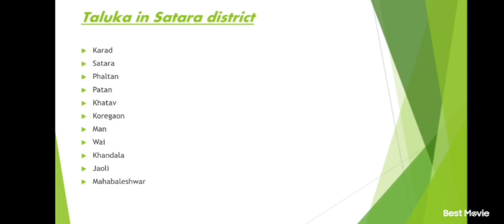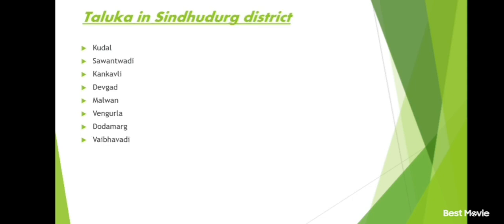Sangli district and its talukas: Shirol, Walwa, Palus, Khanapur, Atpadi, Jat, Khargaon, Tasgaon, Miraj, Kavthe Mahankal.